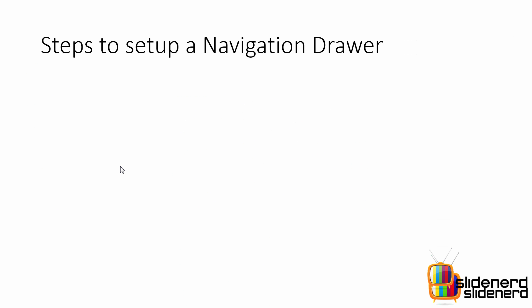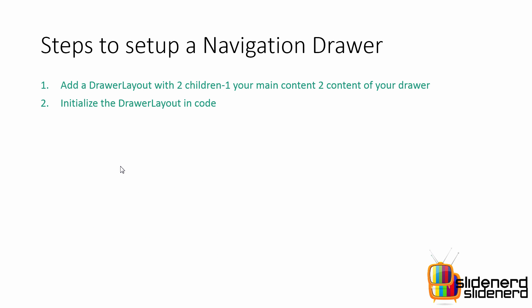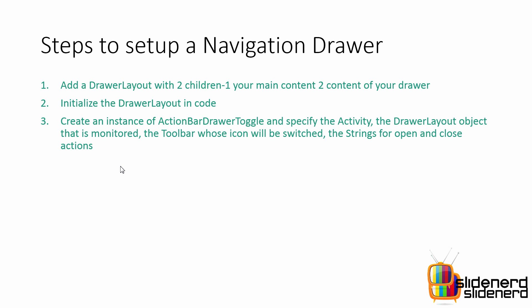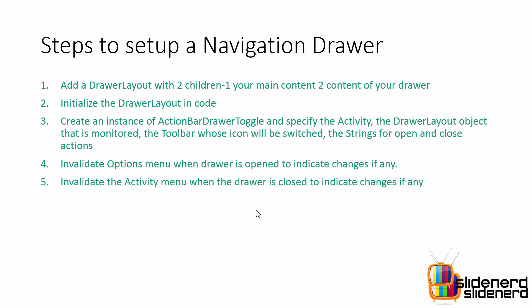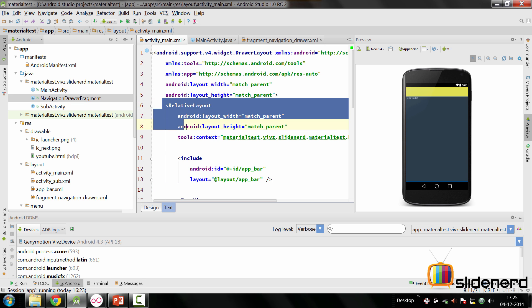Let's get an overall picture of the steps to set up a navigation drawer. First, add a drawer layout with two children inside activity_main.xml — already done. Second, initialize the drawer layout in code. Third, create an instance of ActionBarDrawerToggle, which implements DrawerLayout.DrawerListener with methods like onDrawerOpened and onDrawerClosed. You also need to invalidate the options menu when the drawer opens and closes. We'll cover each of these in detail.